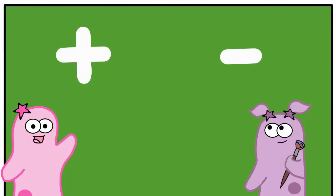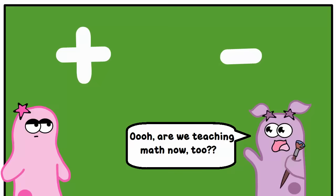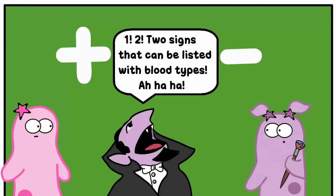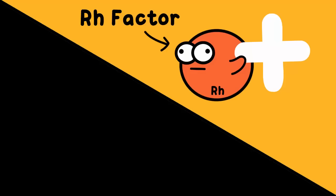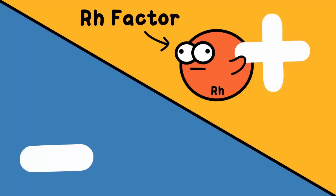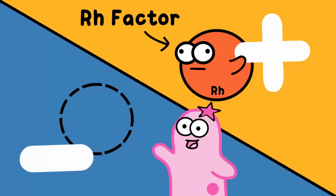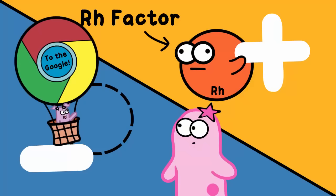One thing that makes all of this a bit more complicated: blood types also have a plus or minus sign listed by the blood type, and this makes a big difference with blood donations. If you have a plus, it means you have another protein called RH factor on the surface of your blood cells. We're not going to be able to go into that in this short clip, so look that up if you'd like to learn more.